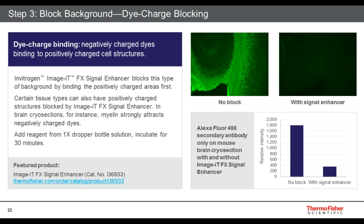A form of blocking that isn't commonly known is dye charge blocking. Negatively charged dyes like the Alexa Fluor dyes will be nonspecifically attracted to positively charged areas on the tissue — in cultured cells, that's nuclei and mitochondria; in cerebellum sections it's the white matter. Protein blocking will not stop this. Instead, you need to use our Image-iT FX Signal Enhancer solution. It blocks those positively charged areas — a dropper bottle solution — and when you come in with your negatively charged dyes, you don't see that binding. Do your protein blocking first, then drop this solution onto your section for about 30 minutes before proceeding to further steps.